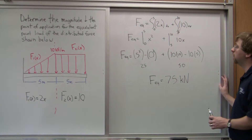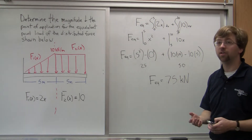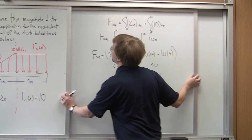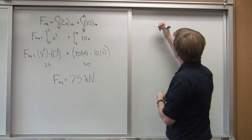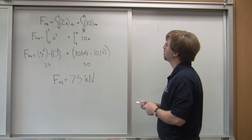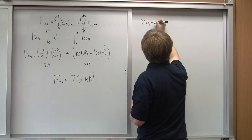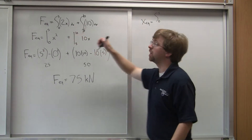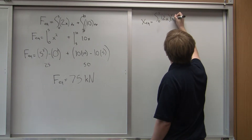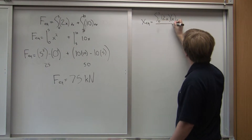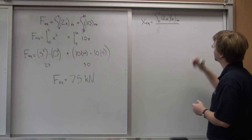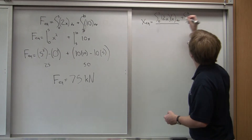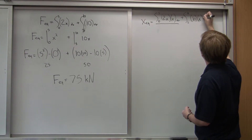Next I want to find the location of the equivalent point load, or my x_eq value. For that, we're going to need those two integrals. X_eq is going to be equal to the integral from zero to five of my force function times x — so 2x times x, integrating with respect to x — plus the integral from five to ten of 10 times x dx.